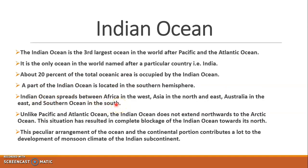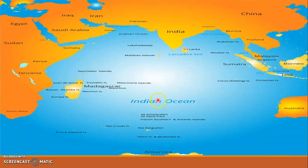The Indian Ocean extends from Africa in the west, Asia and Australia in the north and east, and the Southern Ocean in the south. Unlike the Pacific and Atlantic Oceans, the Indian Ocean does not extend northward towards the Arctic Ocean, resulting in a complete blockage on the north side.